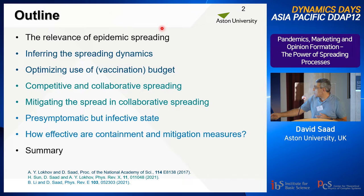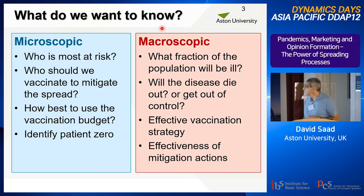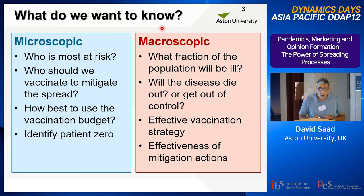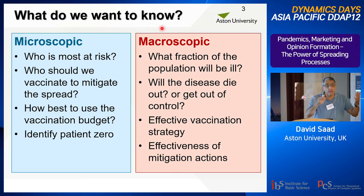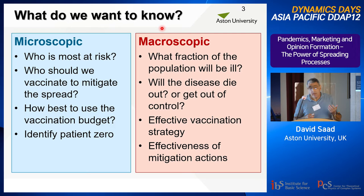This corresponds to the three papers listed below. What do we want to know about epidemic spreading? Microscopically, it's quite easy: we want to know what is the fraction of the population that is ill, whether the disease will die out or get out of control, what would be an effective vaccination strategy, and how effective are mitigation measures. But moreover, microscopically, we may want to infer exactly who is most at risk and who should we vaccinate in order to mitigate the spread after 100 days.